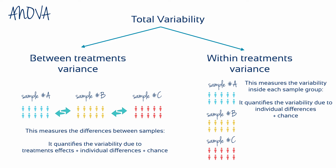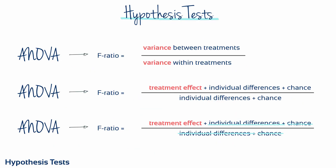Further analysis breaks down the between and within treatment variances to allow us to separate out and quantify the effect of the treatment, individual differences, and chance. Because the individual differences and differences due to chance feature in both the numerator and denominator of the F-ratio, if we know their numerical values, we can cancel them out, leaving us with a measure of just the treatment effect.